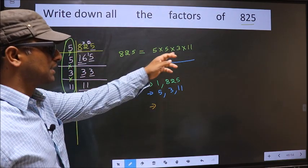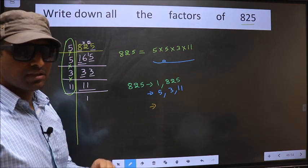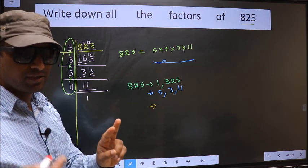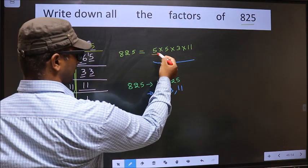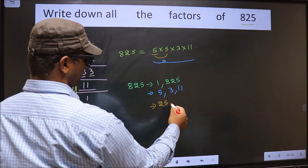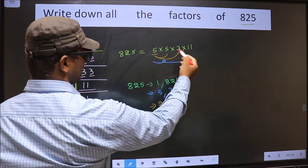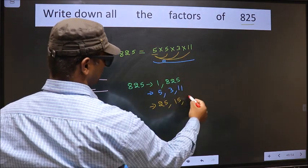Now from these numbers, you select a combination of two numbers. How do we do that? See. First, you fix 5. Combine with 5. 5 into 5, 25. Now you combine with 3. 5 into 3, 15. Now you combine with 5, 15.